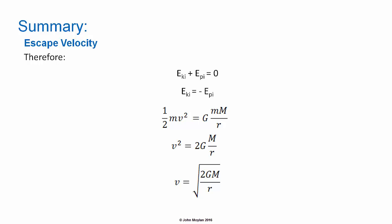We can rearrange this as E subscript Ki equals minus E subscript Pi, and substituting in from the equations for potential and kinetic energy, we get the equation: one half mv squared equals capital G times little m times big M over R. Rearranged, this is V squared equals 2 capital G capital M over R. Taking the square root of both sides, we get V equals the square root of 2 capital G capital M over R, where V is the escape velocity.